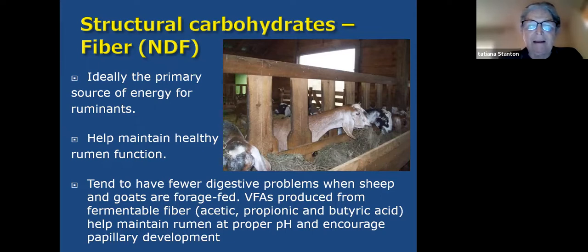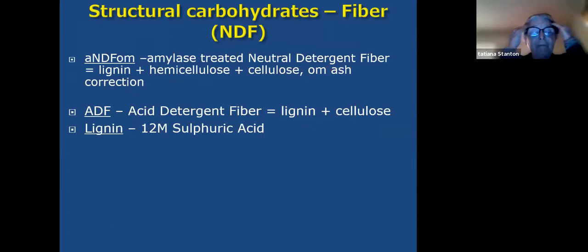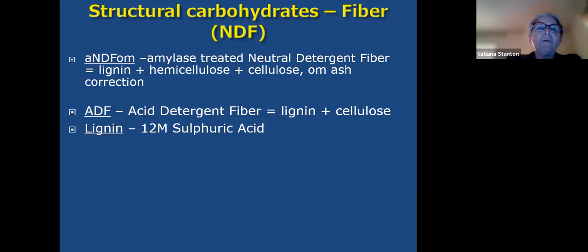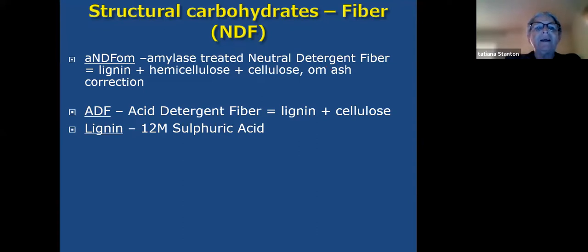These volatile fatty acids help maintain the rumen at proper pH and encourage papillary development. When looking at forage analysis, they used to use crude fiber. Crude fiber was originally developed for the textile industry — using an acid to remove hemicellulose and a base to remove lignin, leaving cellulose used to make clothing like linen. But it isn't a very accurate measurement of what fiber is actually present.